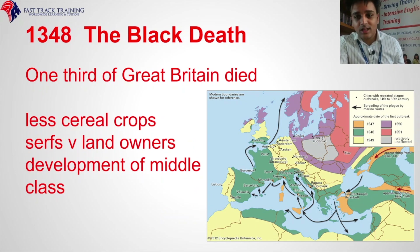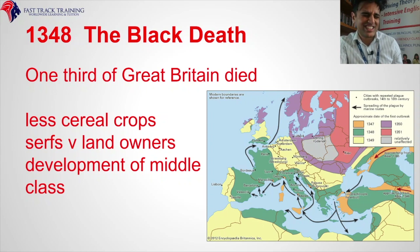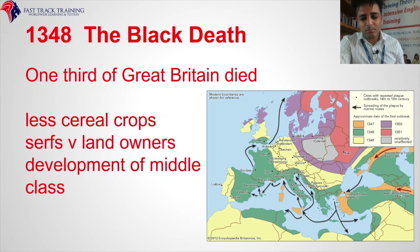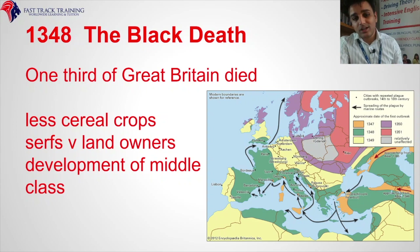1348: the Black Death. Very similar to coronavirus, but at the time it killed a third of Great Britain and a third of Europe. It's a plague — the first major plague. The next plague will be in 1665, covered in a later video. With fewer people alive, there were less people to collect the crops in the fields. Servants or serfs began demanding more wages from landowners because there weren't enough people left to work the land.